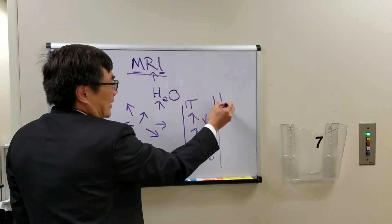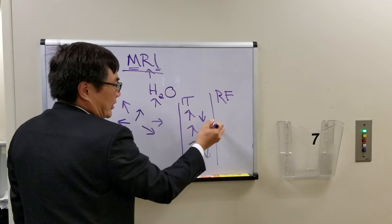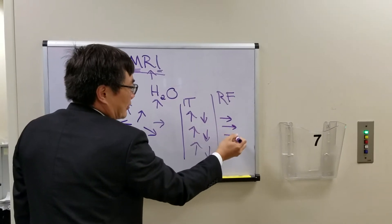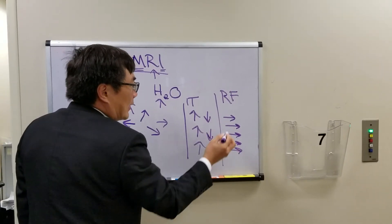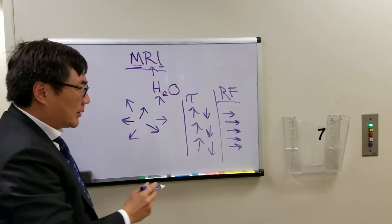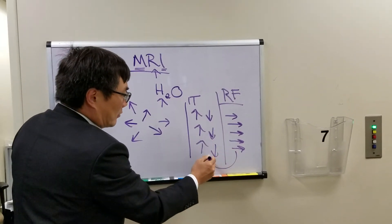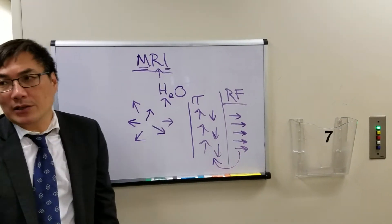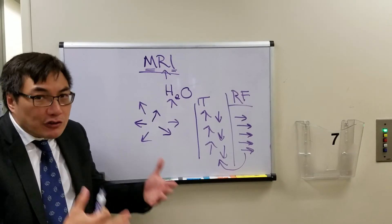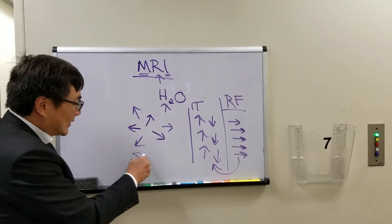At that point, radiofrequency pulse can be given to impart energy to the system that will flip the protons into the transverse plane. When we turn off this radiofrequency pulse, the protons will return to their static equilibrium state. That will give off energy, which we can measure as signal intensity.